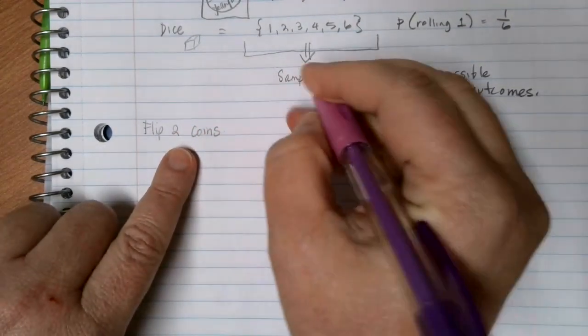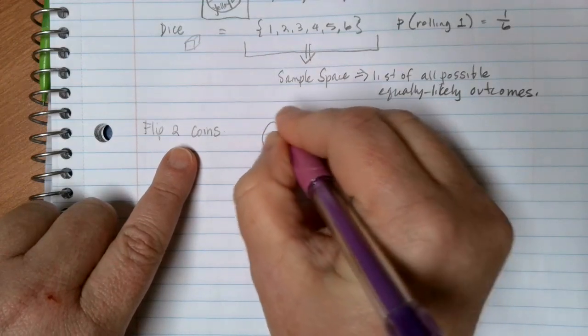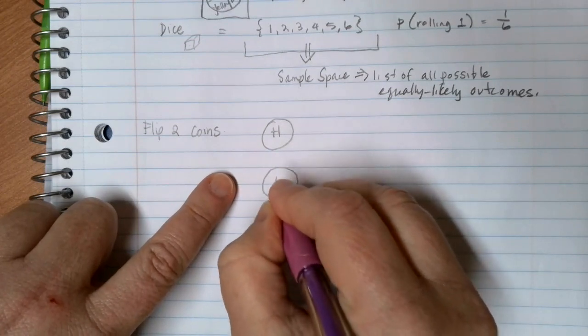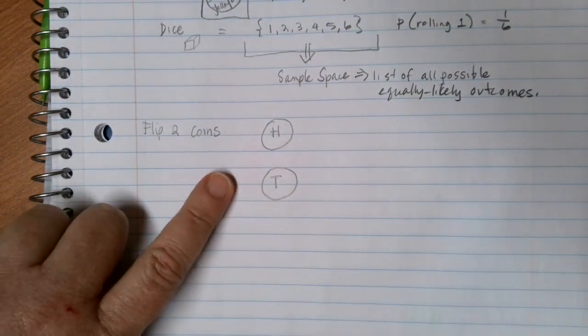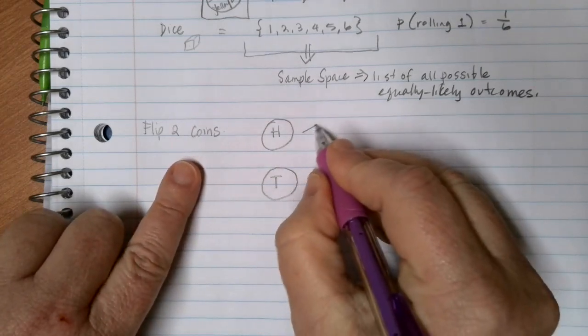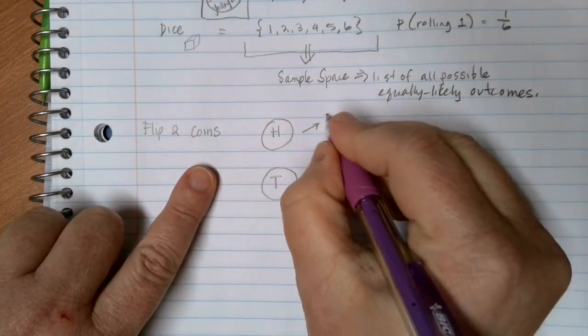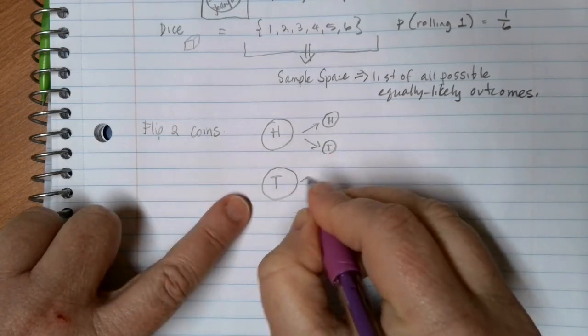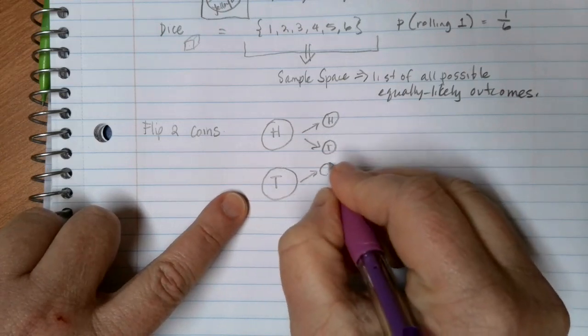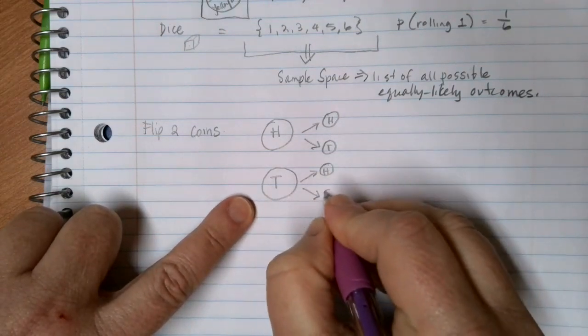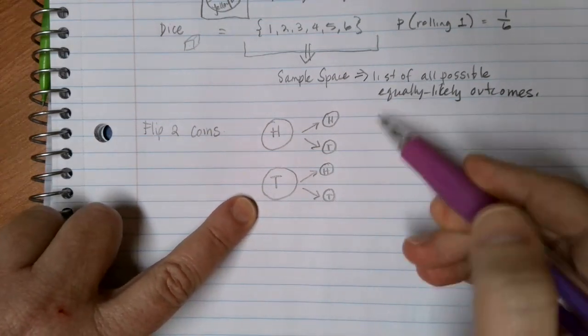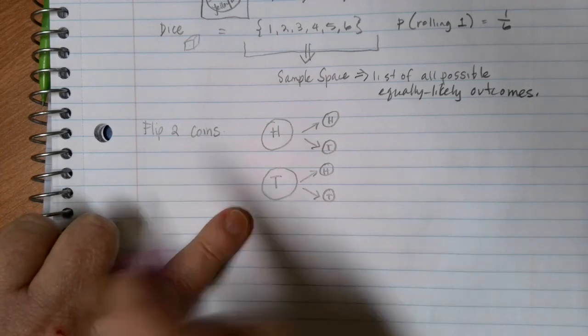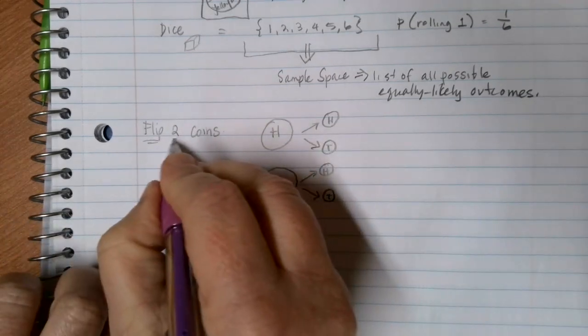Our flipping of one coin gives us two options. We can roll a head on our first flip, or we can get a tails on our first flip. And I'm just going to write H or T for that. Now when I get to my second flip, I might get heads on that second flip, or I might get tails on that second flip. I might get heads on the second flip if I rolled tails first, or I might get tails on the second flip if I rolled tails first. And each of these different possibilities is equally likely to occur.